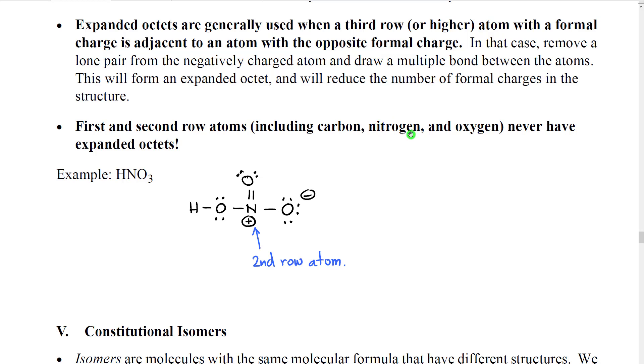So specifically, nitrogen. So if we look at this structure again, see this is a structure that we might think would have an expanded octet. Because here we have an atom with a positive formal charge adjacent to an atom with a negative formal charge. You might think we could move a pair of electrons here and make that neutral. But that would give nitrogen 10 electrons and expanded octet. Nitrogen being a second row atom cannot have an expanded octet. So this is the only structure we can draw.